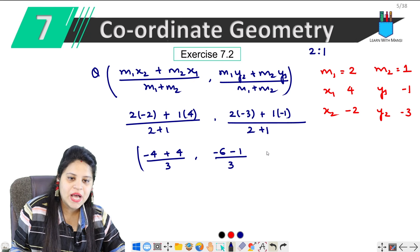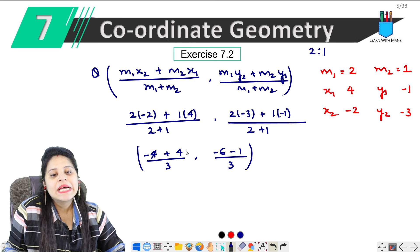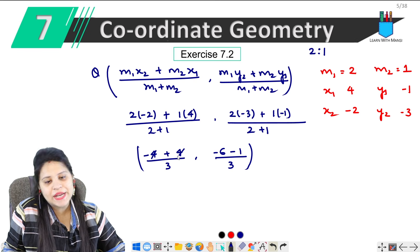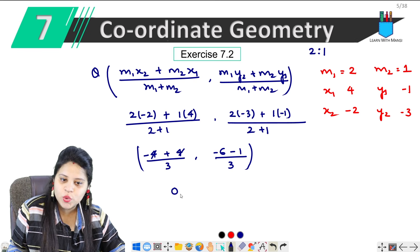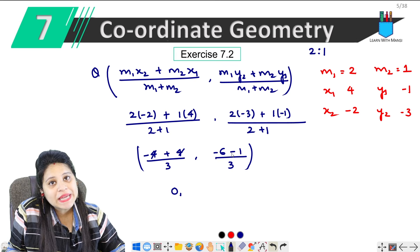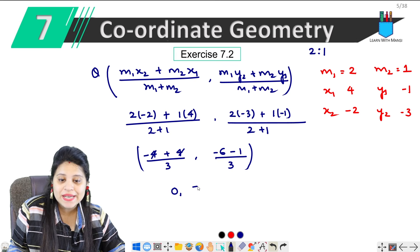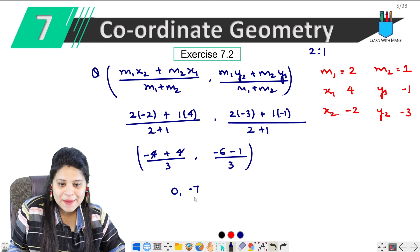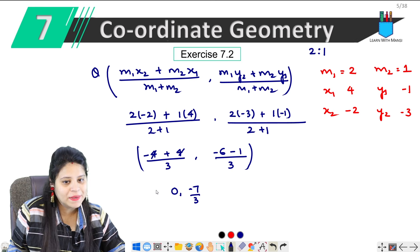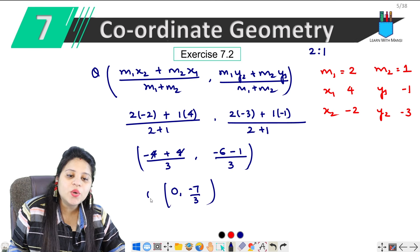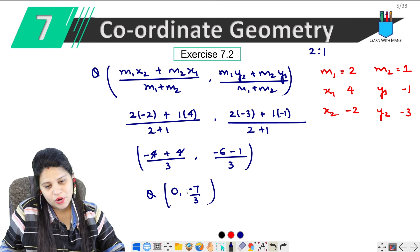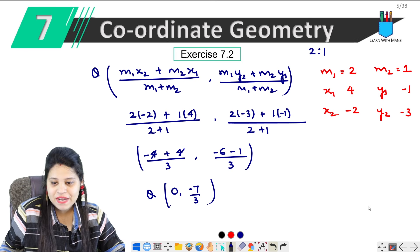So we have to solve this. Here we have to cancel. Plus minus, -4 + 4 is 0, so this will be completely 0. For y coordinates, then minus minus plus, -6 + -1 is -7, upon 3. So this is our Q coordinate: (0, -7/3).